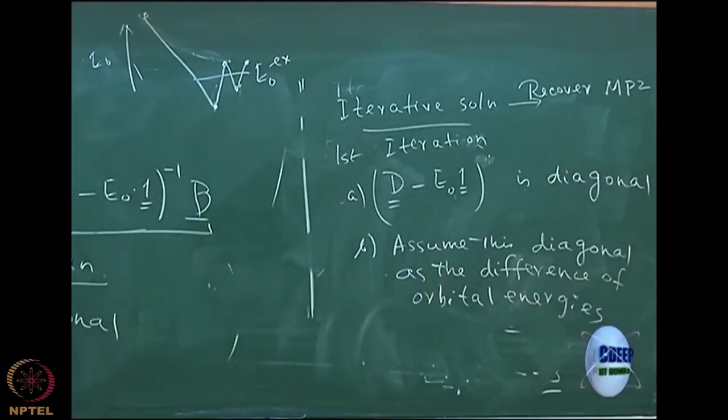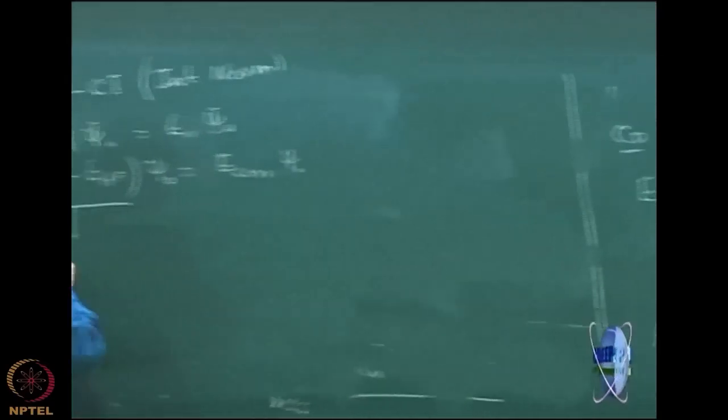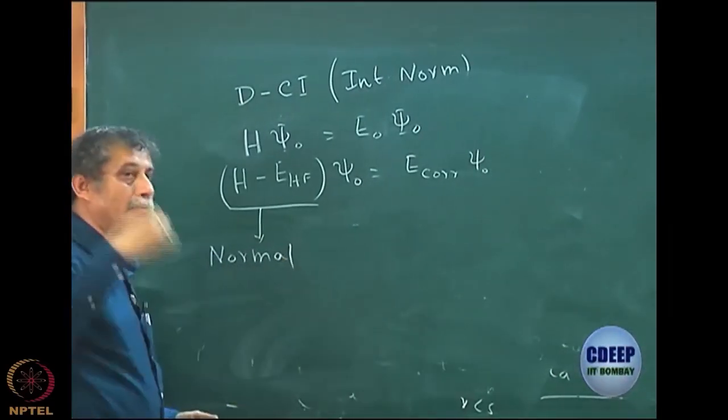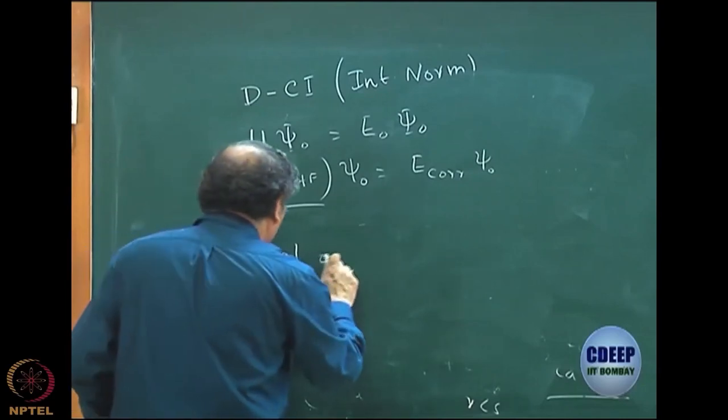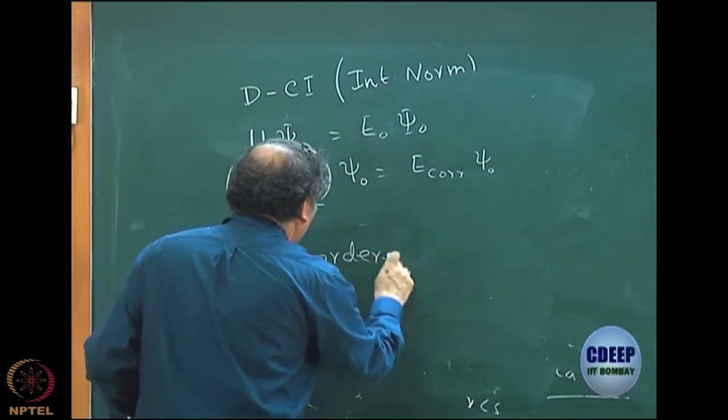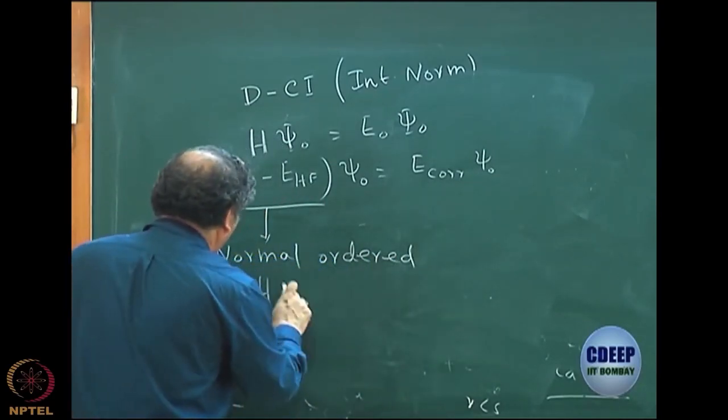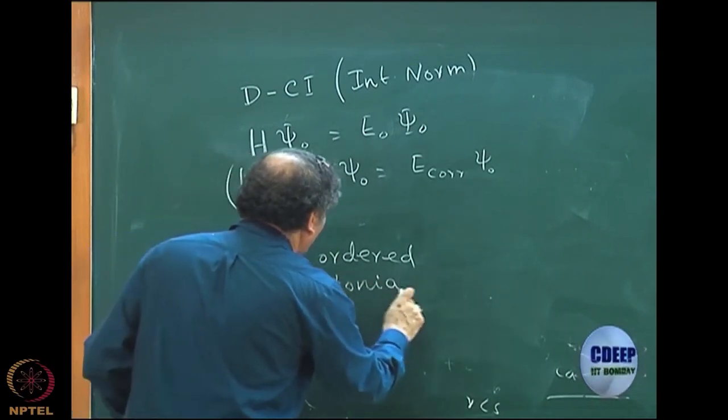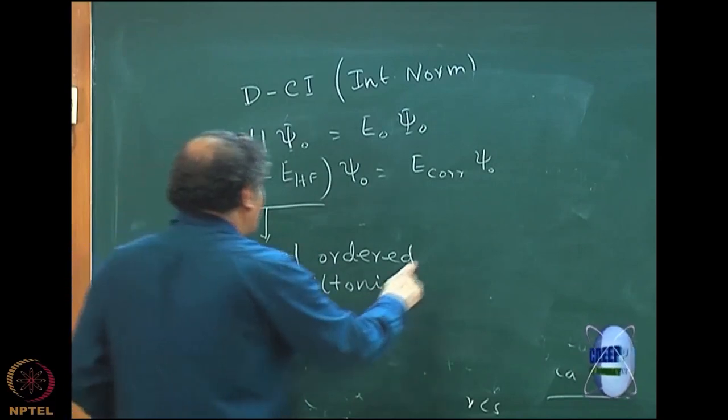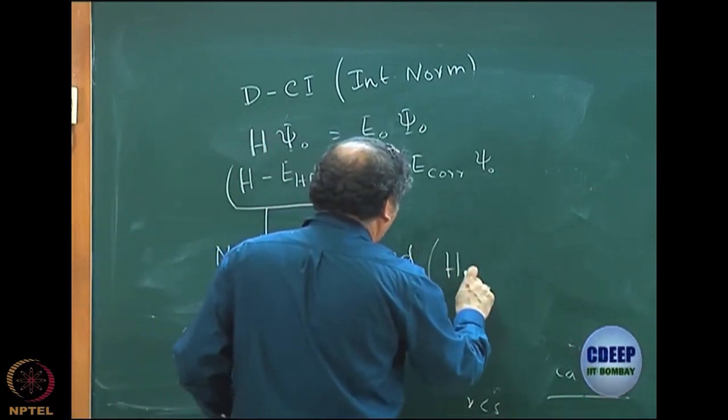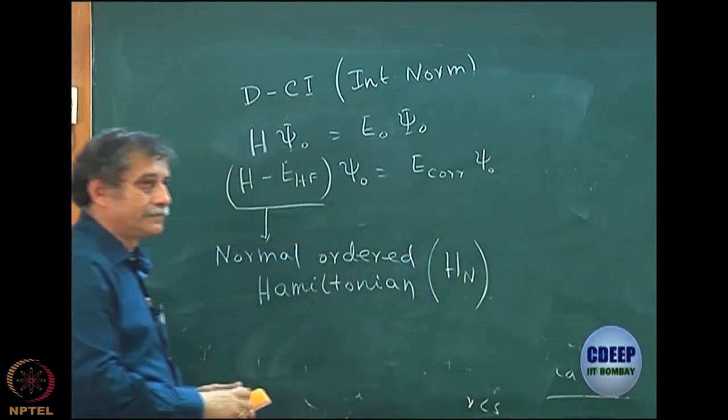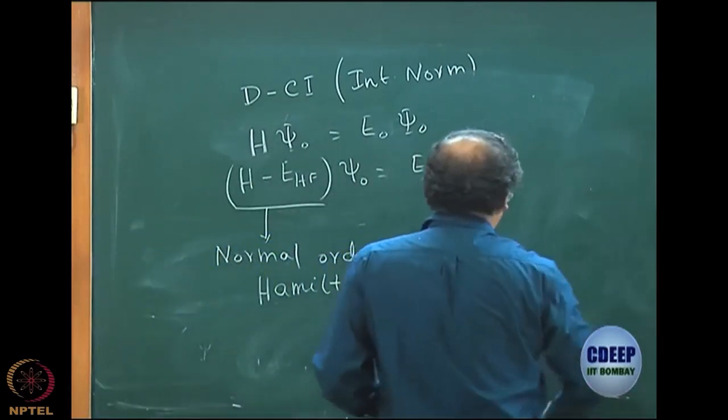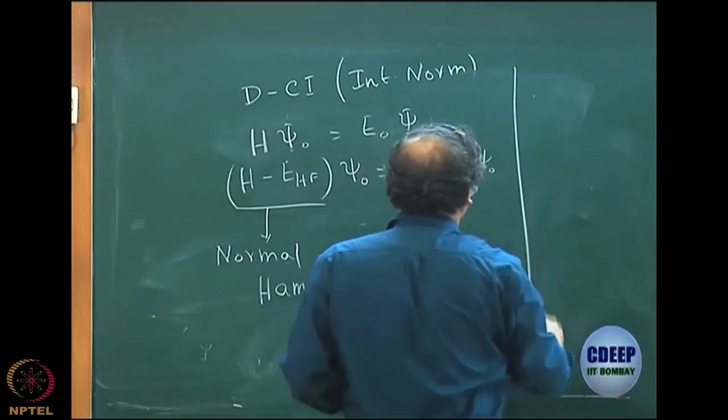This operator is very often called, and this will be actually much made much more clear when you do second quantization later, but let me just write this. It is called normal order Hamiltonian and very often it is denoted as H_N. H subscript N and the entire equation now can be written in terms of this operator.